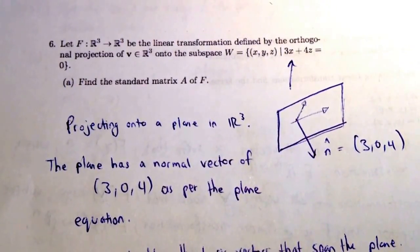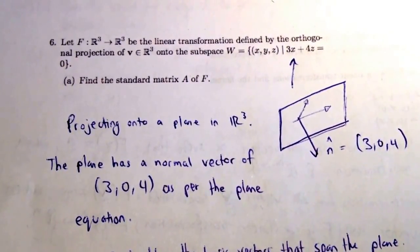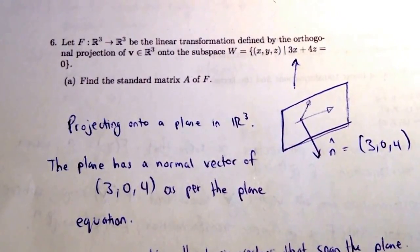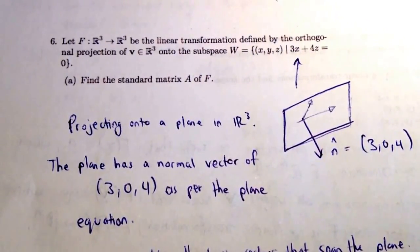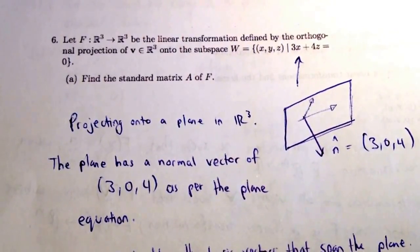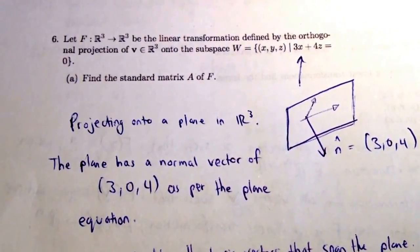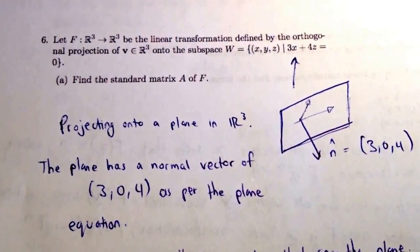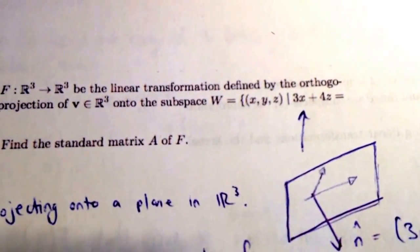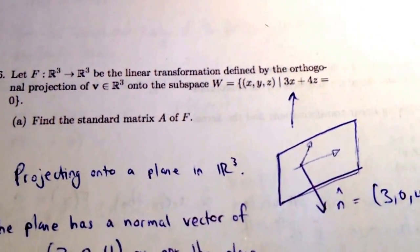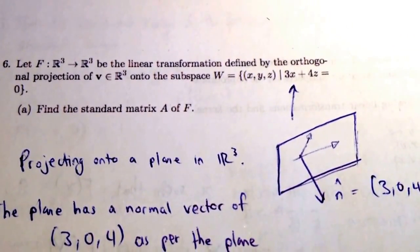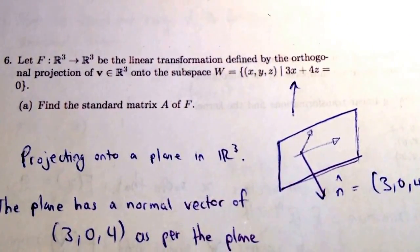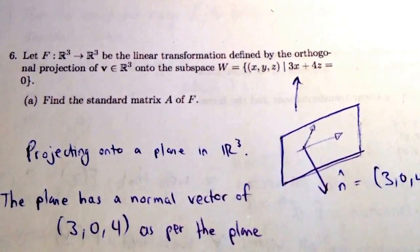In this video, we're asked to look at the orthogonal projection of a vector onto a subspace in R³, and what we really want to do is find the standard matrix of this linear transformation that is the orthogonal projection of this vector. We can see by looking at that subspace equation, w equals what's written there, we can see that we have 3x plus 4z equals 0, and we know that's going to be a plane because it fits the general plane equation.